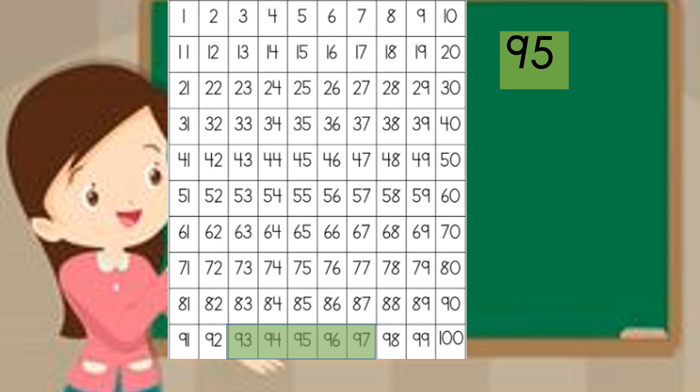Counting on and back from a specific number. Now if you struggle with this one, you need to use a 100 chart. Find that number on the 100 chart and look at the numbers before it and the numbers after it for counting back and counting on. So if I look at the number 95, I can see the numbers before it will be 94 and then number 93. And if I count on from number 95, it will be 96 and 97.